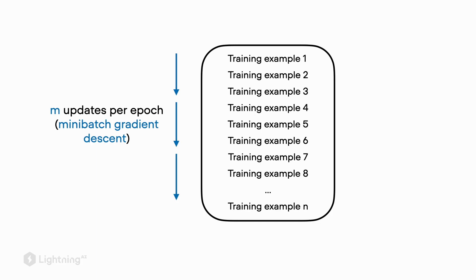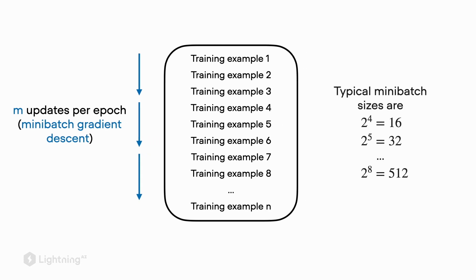If you are curious, typical mini-batch sizes are usually powers of two, and this has something to do with GPU architecture. In deep learning we want to make efficient use of our hardware, and we will provide additional resources where you can find out more. Now let's get back to the mini-batch algorithm and see how it works.